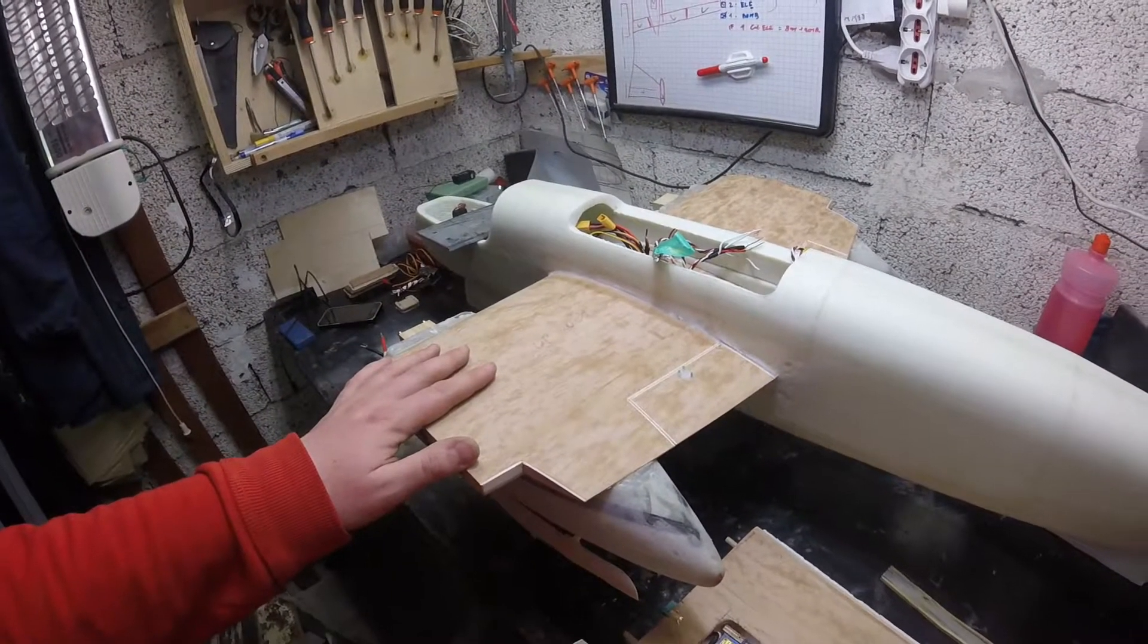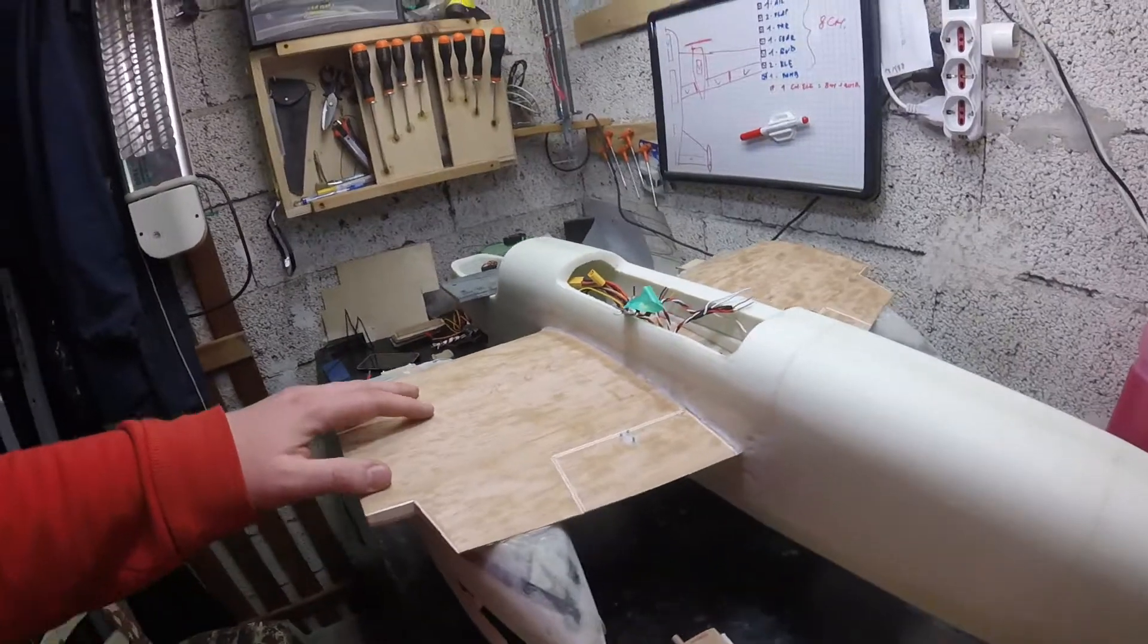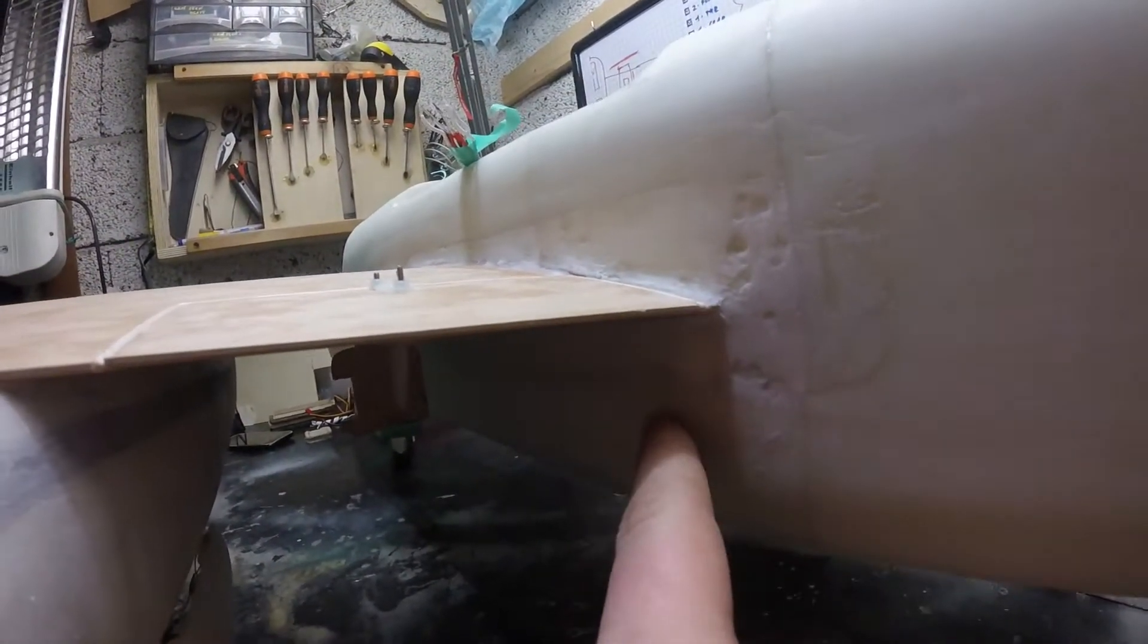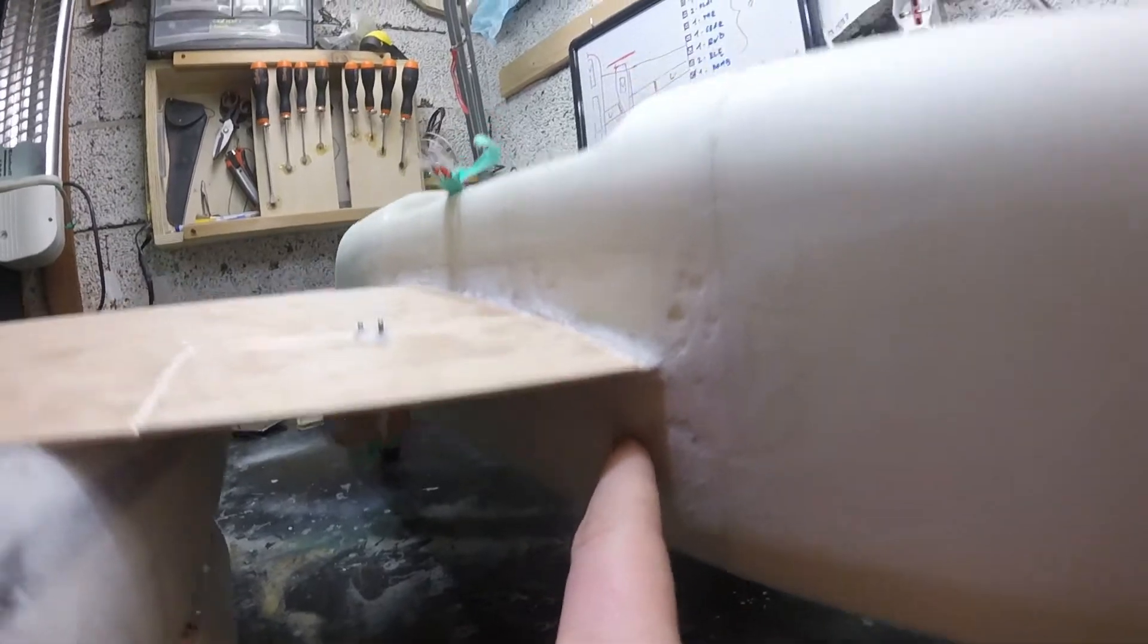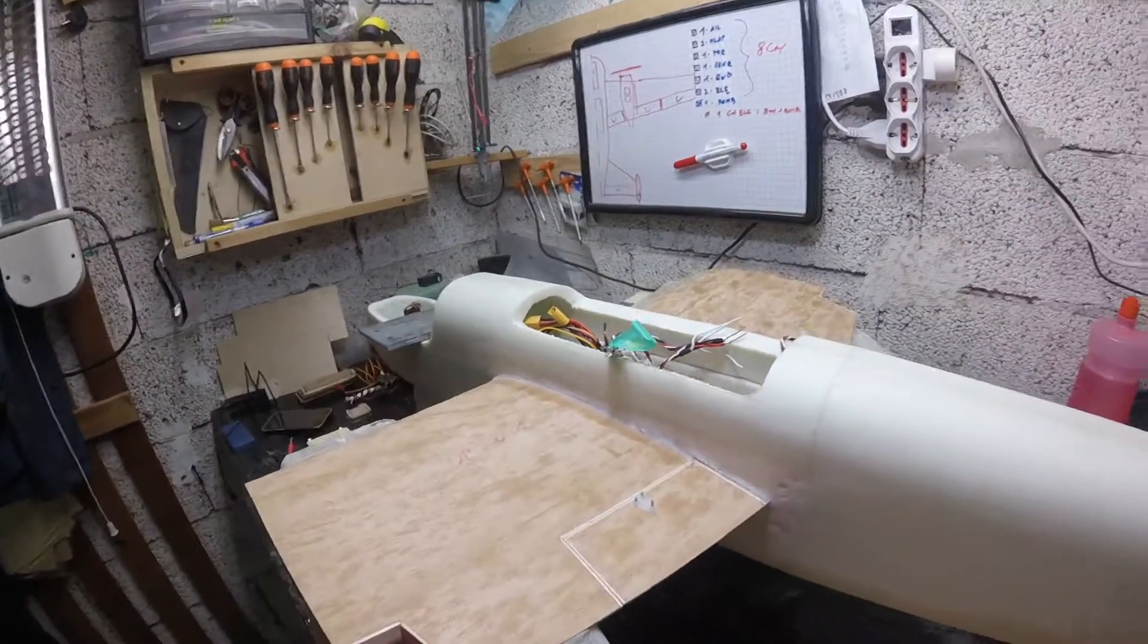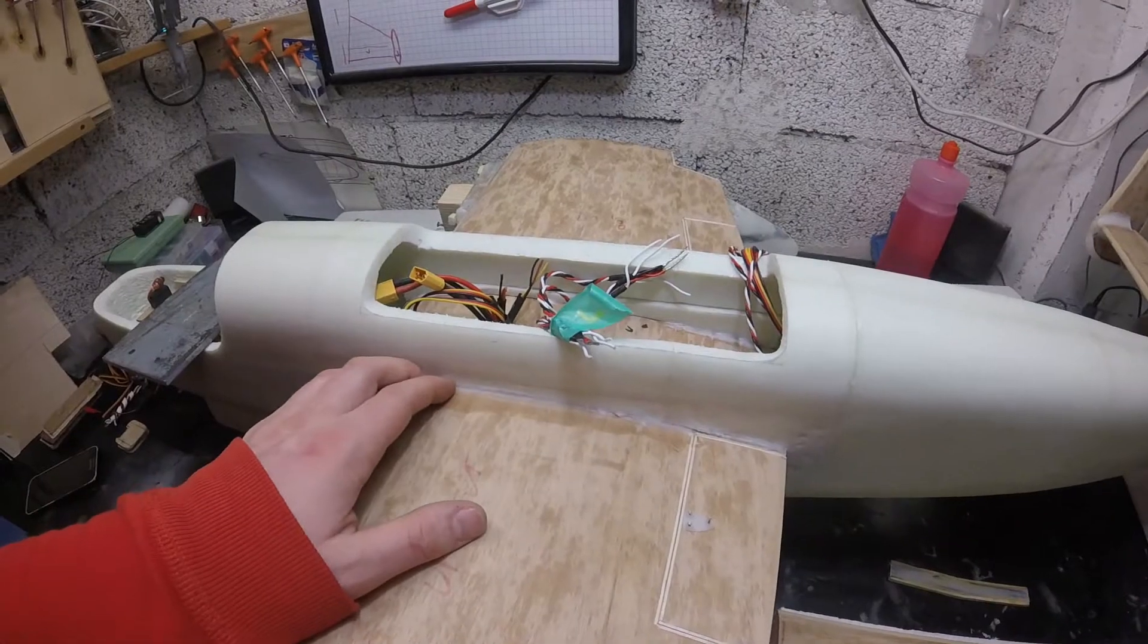So I've also glued the main wing in place. I've started with gluing the lower section of the shell onto the fuselage and then gluing the upper part of the shell.